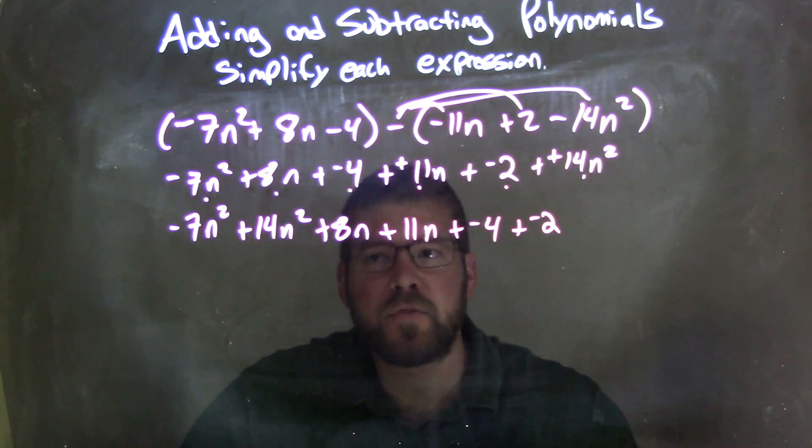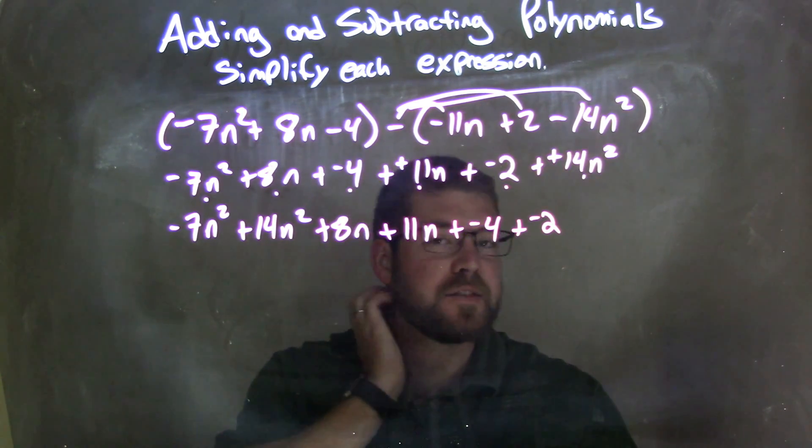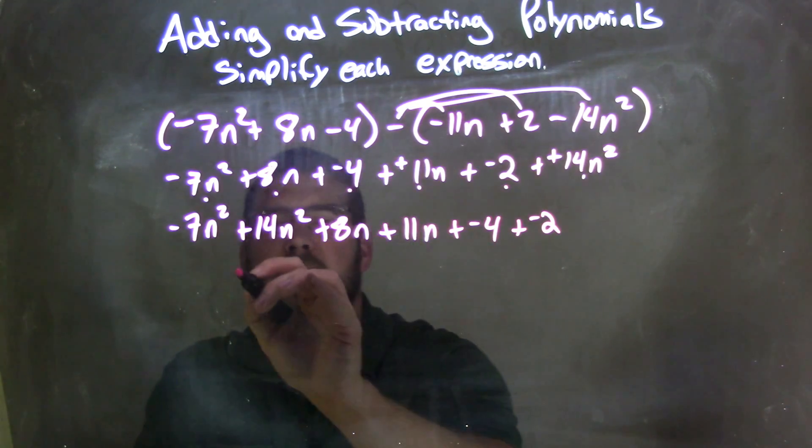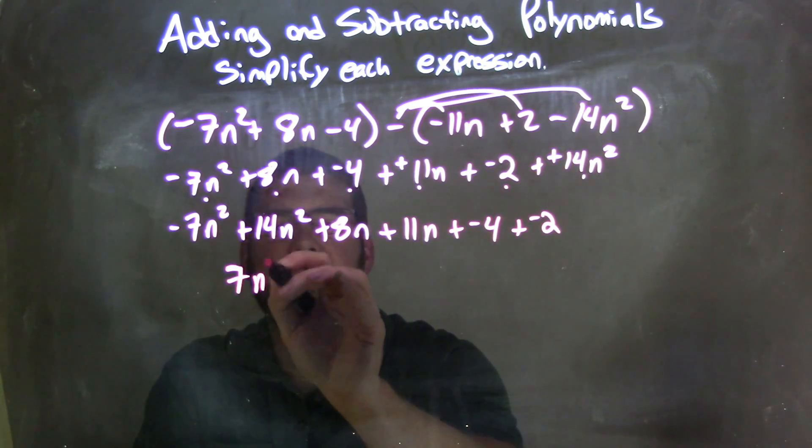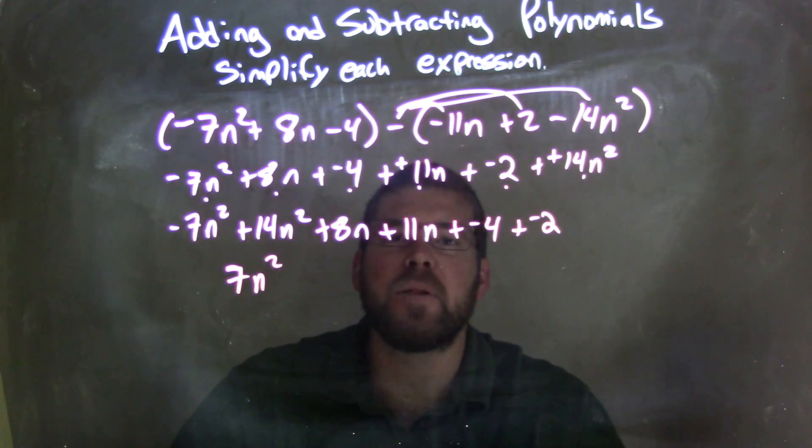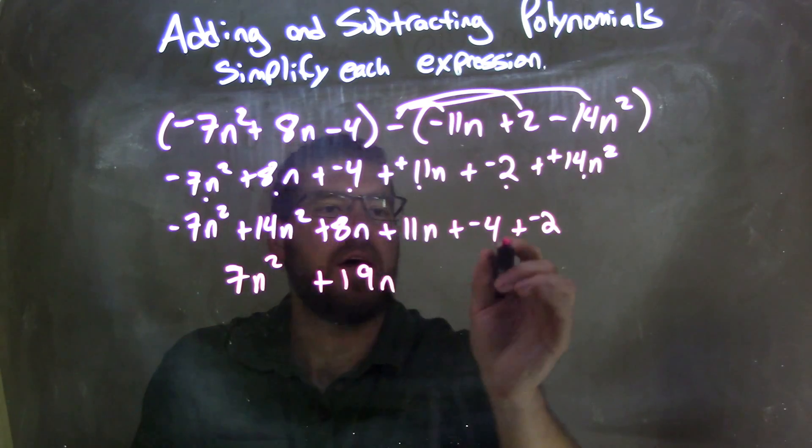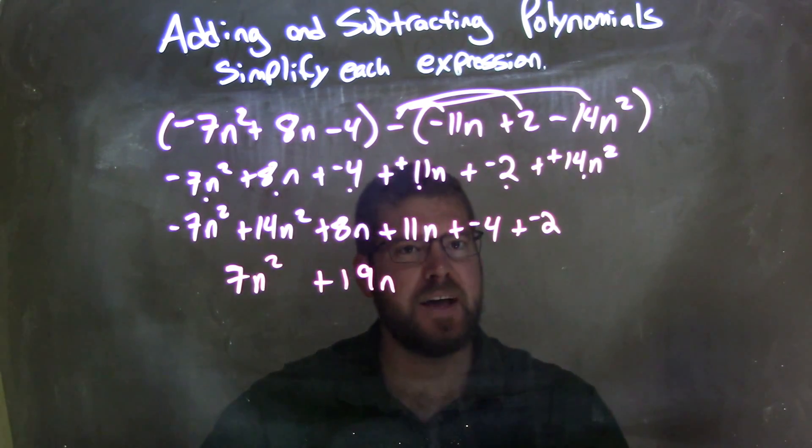So now let's combine our like terms together and simplify. Negative 7n squared plus 14n squared is a positive 7n squared. 8n plus 11n is 19n.